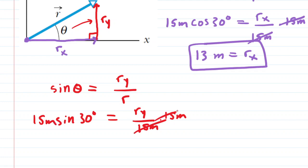Pick up your calculator, multiply 15 by the sine of 30, and we get 7.5 meters. That equals r sub y. This is the correct answer for part b of the question.